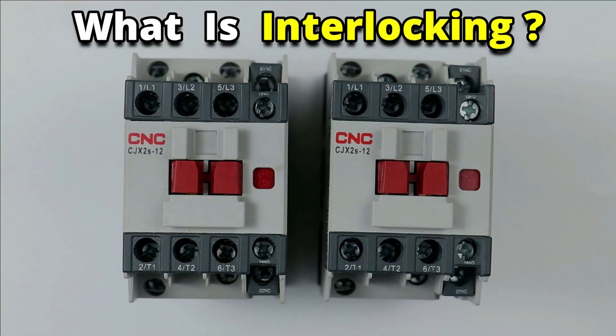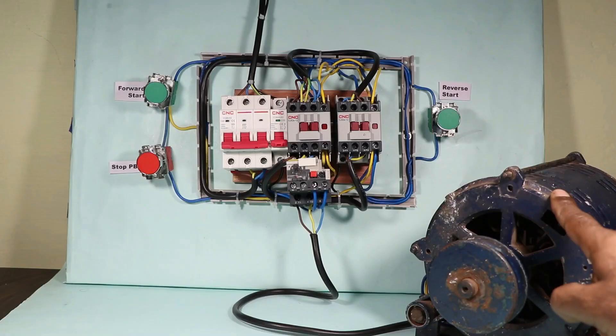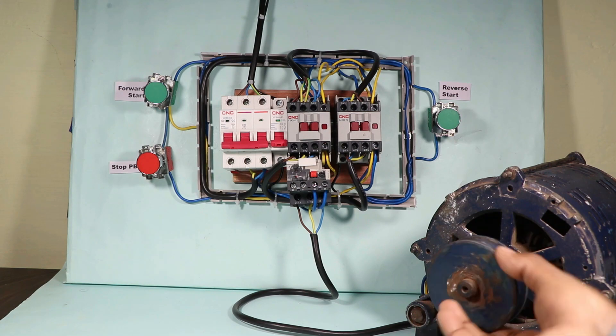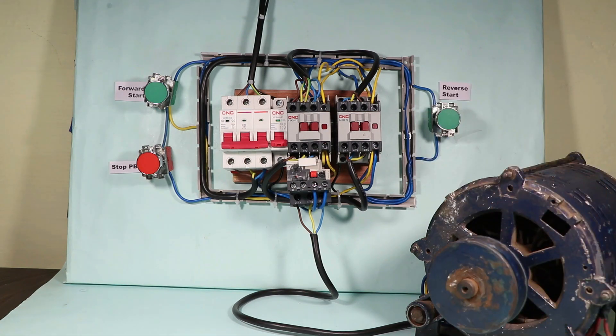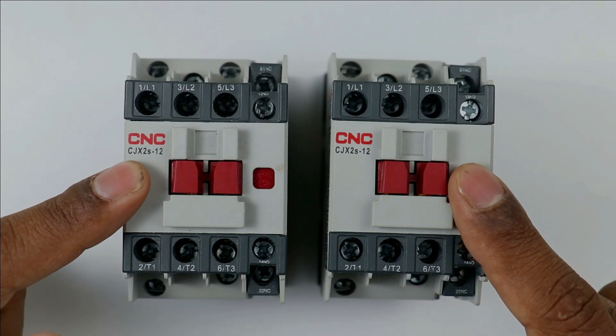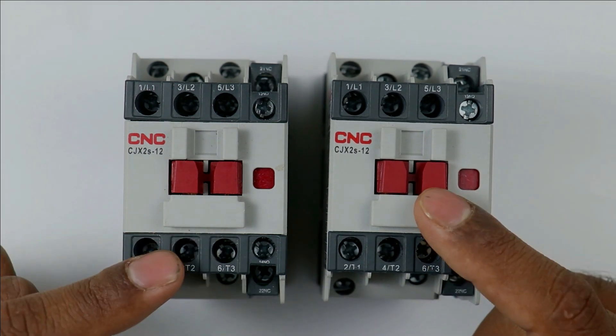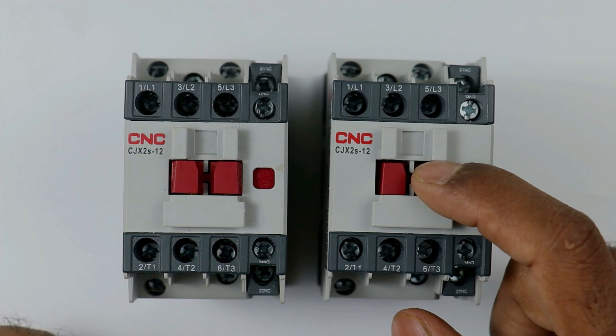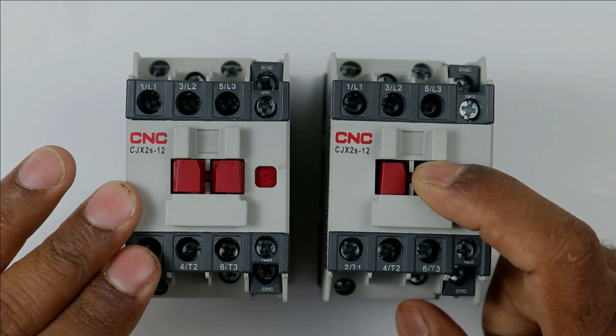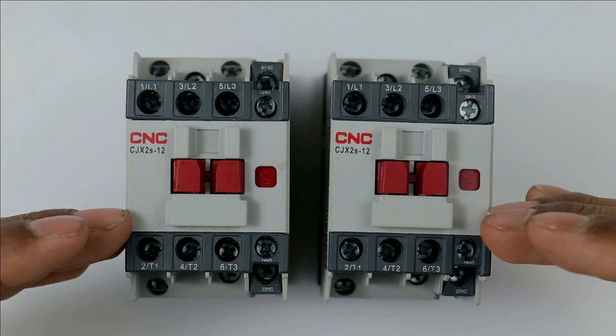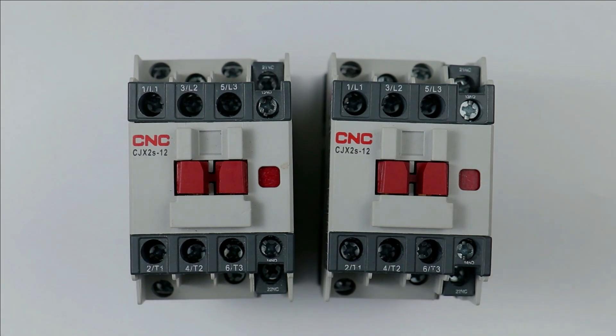First we will learn what is interlocking. Suppose you have a motor and you need to run this motor in forward as well as in reverse direction. Then you have to use two different contactors. But the condition here is only one contactor should be operated at a time. If one contactor is in on condition, then the other must not be turned on. This condition is known as interlocking.